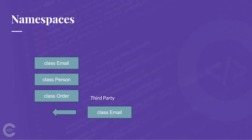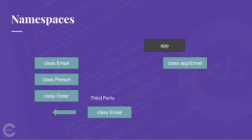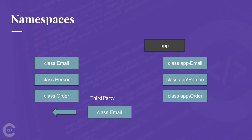That was a big problem years ago, but namespaces can solve this problem. What you need to do is create an 'app' namespace and put all your classes inside it. So your Email class moves into the app namespace, and its identifier is now not just 'Email' — it's 'App\Email'. The same thing happens for Person and Order: 'App\Person' and 'App\Order'.